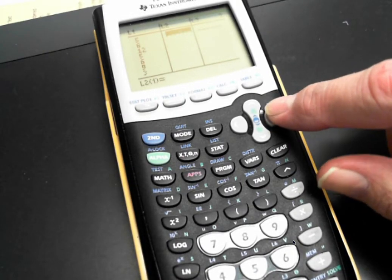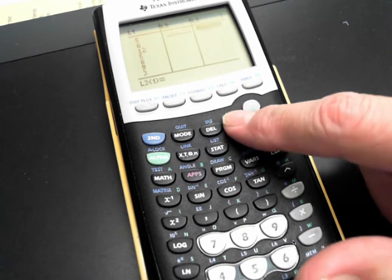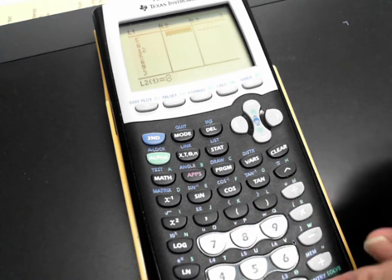If you have more than one list, just arrow over and type in data there.